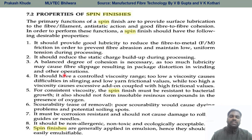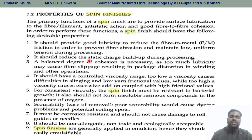Now we will see what are the basic properties necessary in the spin finish. They need to perform three basic functions: lubrication, anti-static action, and good fiber-to-fiber cohesion. The first desirable property is good lubrication to reduce fiber-to-metal friction, in order to prevent fiber abrasion and maintain low uniform tension during processing. The second is to reduce static charge built up during processing. The third is a balanced degree of cohesion, as too much lubricity may also cause fiber slippage.